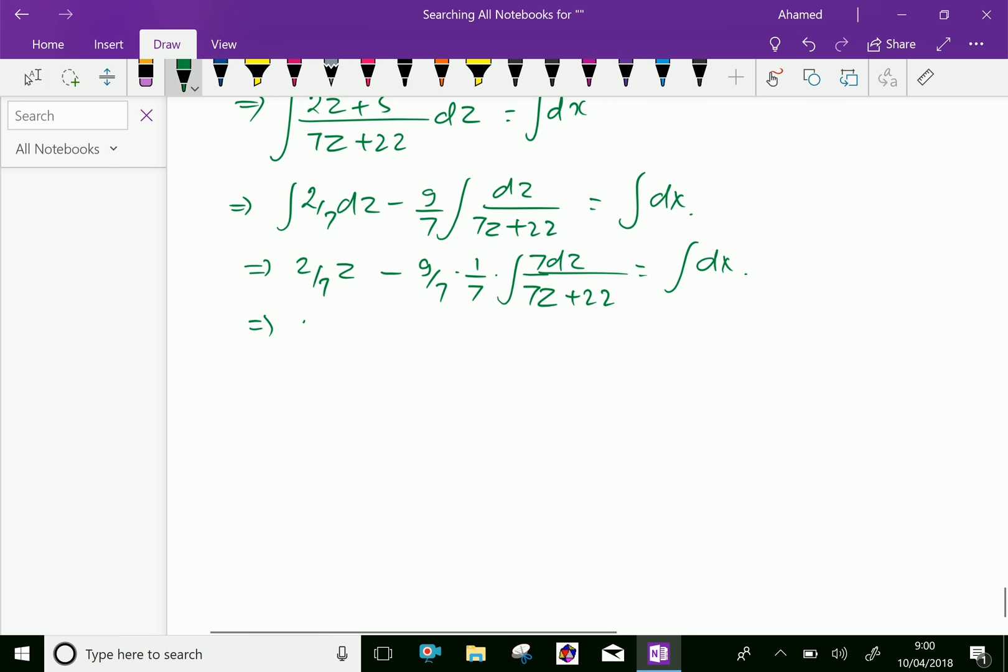Therefore, (2/7)z minus (9/49) log of (7z + 22) equals x + c.